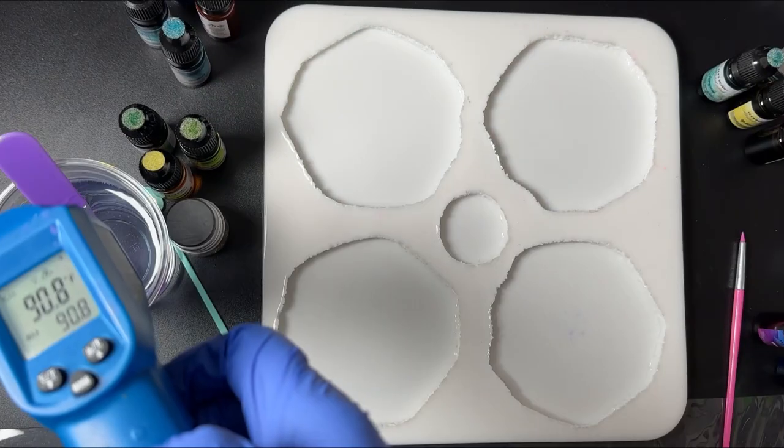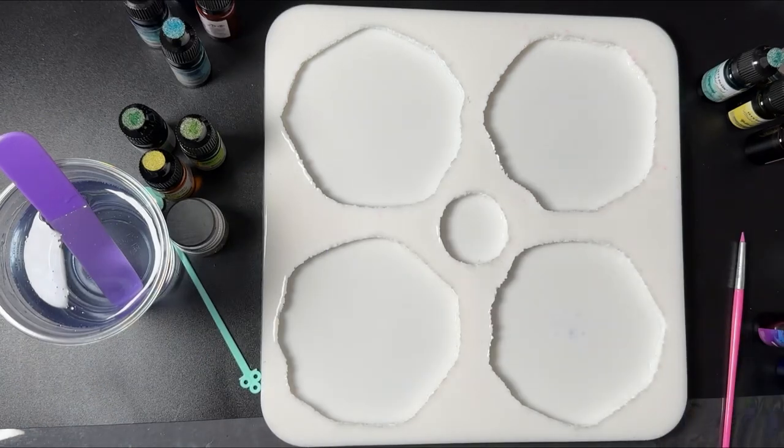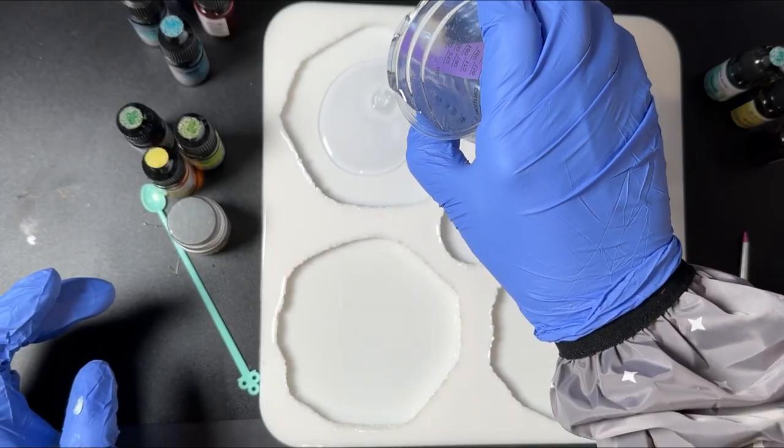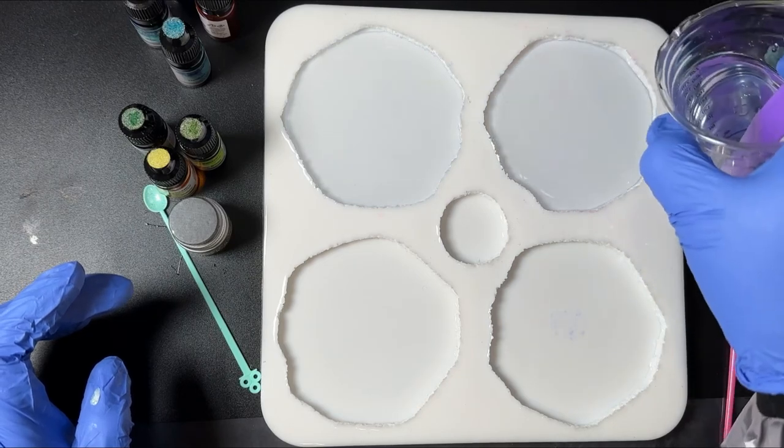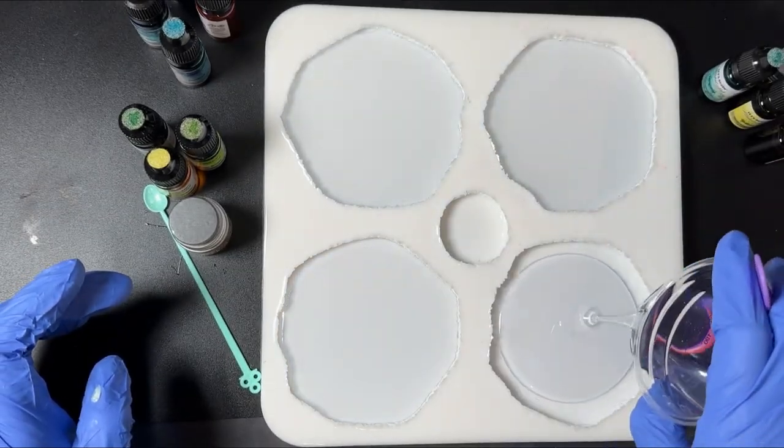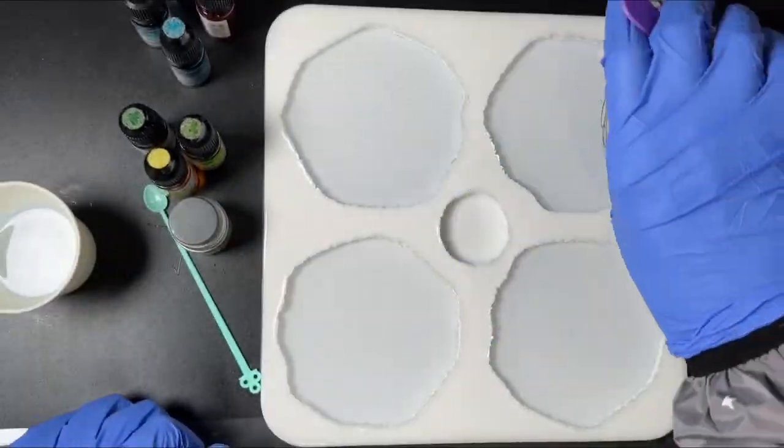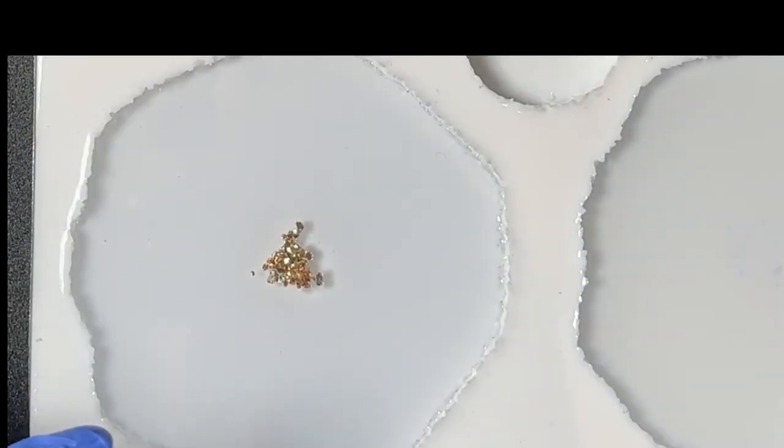The temperature for the resin I found to work for me was 90 degrees Fahrenheit or 32 degrees Celsius, and I then poured my resin into the molds. I didn't pour it all the way to the top, I probably left a hairline of space above because I'm going to be adding the alcohol inks as well as the white.